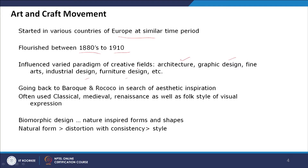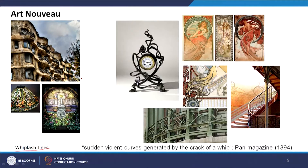Art Nouveau embodied folk visual art and used biomorphic design as inspiration, with distortion applied consistently to evolve a distinctive style. In the Art Nouveau palette, the whiplash line was a predominant style followed in many paintings, designs, and architecture. Here we can see Antonio Gaudi's work where the whiplash line is visible in the wrought iron work on the balcony.